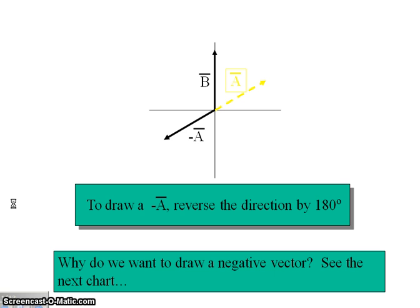How would I draw a negative A? You add 180 degrees. For instance, if this A was at 30 degrees plus 180, it would tell me that the negative A would be at 210 degrees. Negative A is 210 degrees.